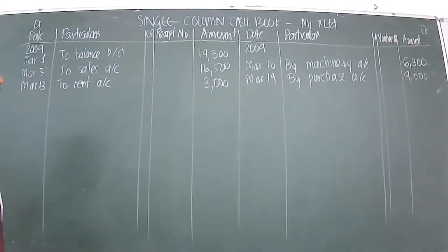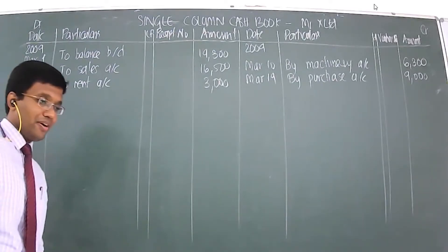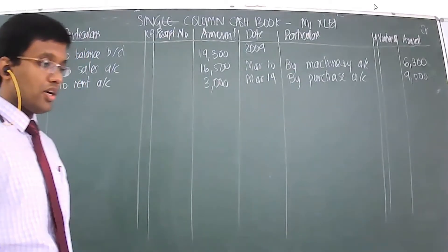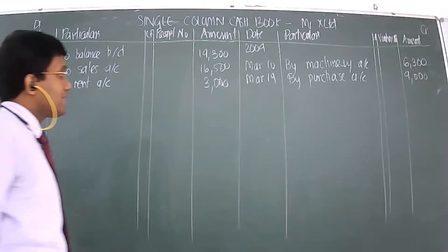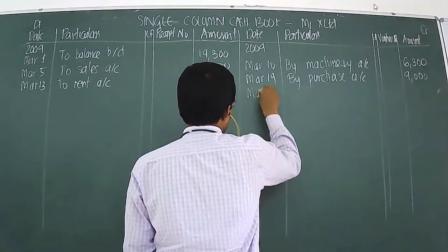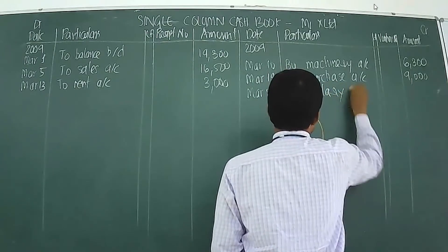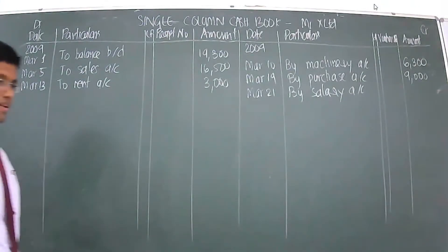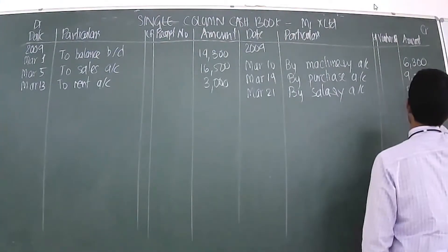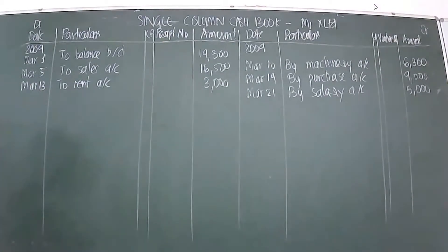March 21st: salary paid to staff, rupees 5,000. When you pay salary, cash would be going out. So it features on the credit side: By Salary Account, and the amount is 5,000.